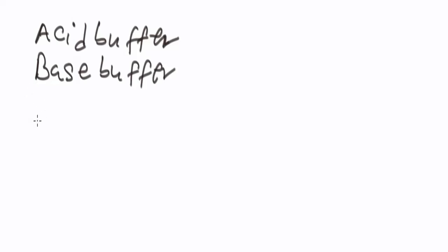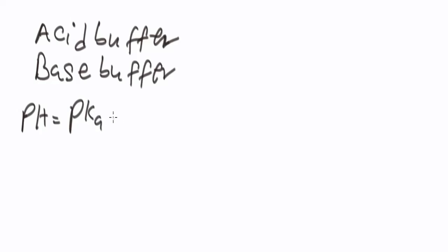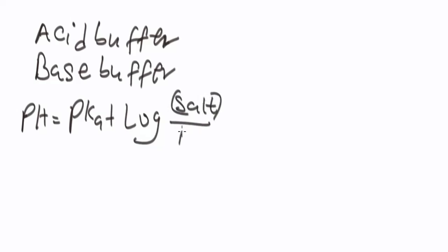We have acid buffer and we also have base buffer. An acid buffer is prepared by mixing a weak acid and its salt, whereas a base buffer is prepared by mixing a weak base and its salt. Now let's look at the Henderson-Hasselbalch equation for calculating the pH of an acid buffer. For the pH of an acid buffer, we have: pH = pKa + log([conjugate base] / [acid]).